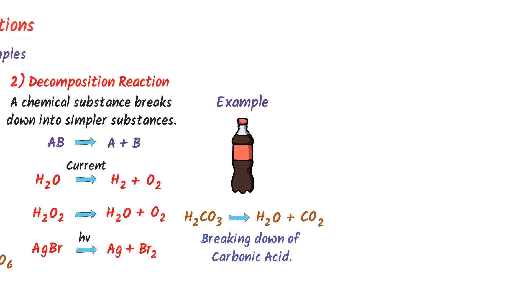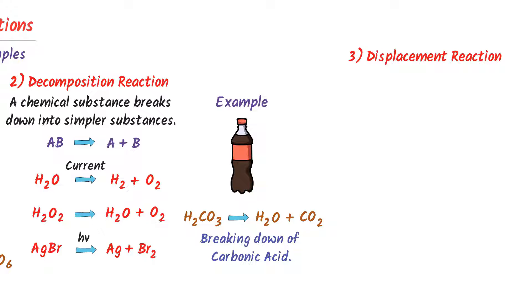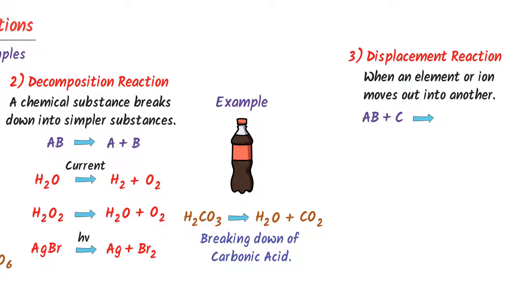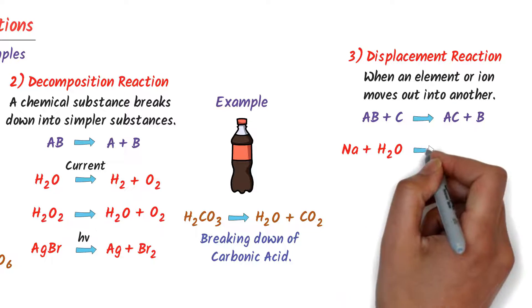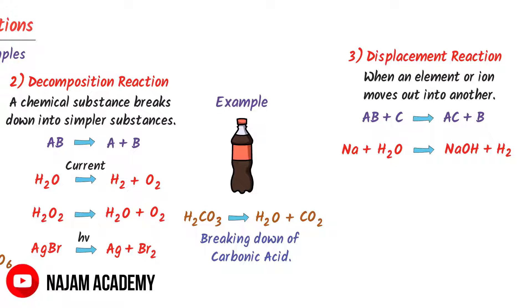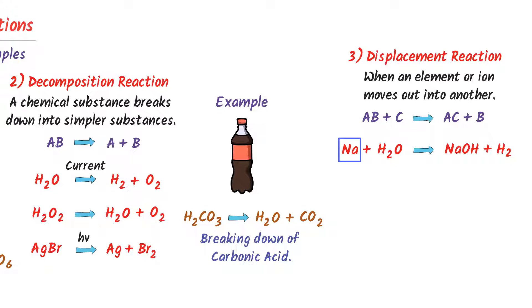Thirdly, displacement reaction. When an element or ion moves out of one compound into another, this type of reaction is called a displacement reaction. Consider AB plus C — here B is replaced by C. For example, sodium plus water would react together to form sodium hydroxide plus hydrogen gas. Here, sodium displaces the hydrogen ion.